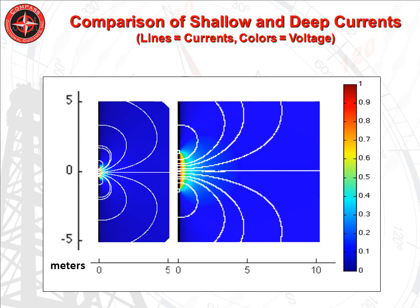This slide shows the effect of guard length on depth of investigation. The plot on the left shows the current pattern using short guards, with an overall electrode length of about four feet. The plot on the right shows the current pattern using long guards, with an overall electrode length of a little more than nine feet. The white lines represent lines of current flow, and the colors represent the voltage — red equals one volt and darker blue equals zero volts. The longer guard electrodes focus the measure current deeper into the formation. Speaking qualitatively, the depth of investigation for the longer array is about a factor of two times that of the shorter array.